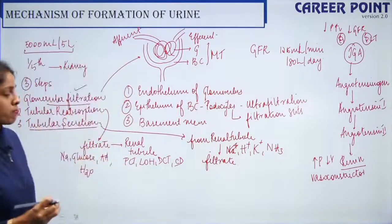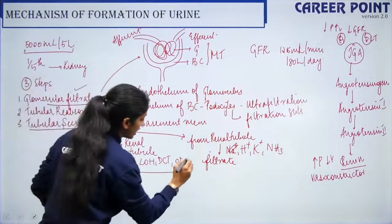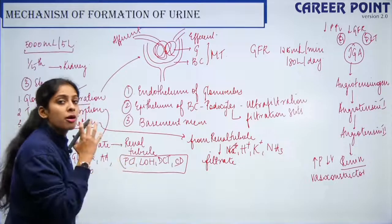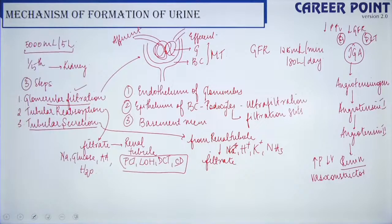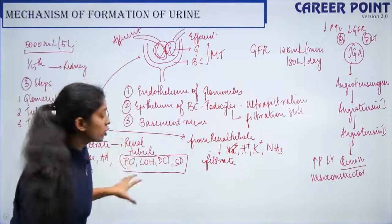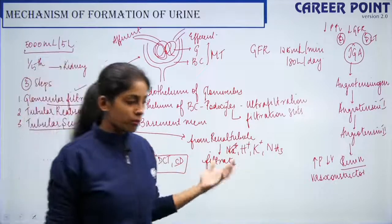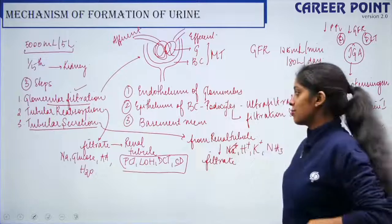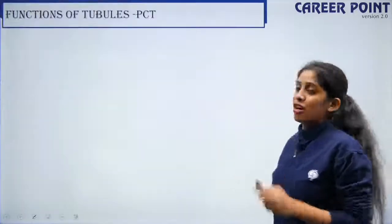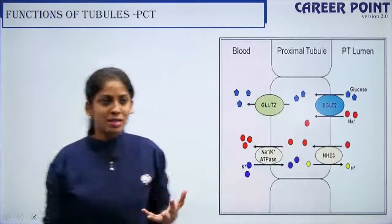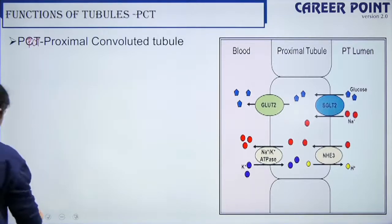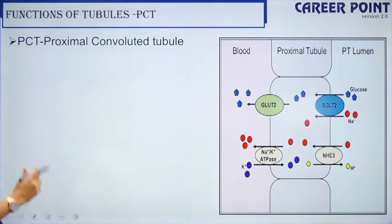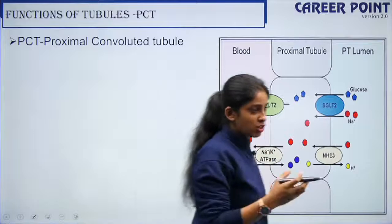Before discussing concentration of urine, we need to see the exact functions of each tubule. We are going to talk about reabsorption in detail and then move into how the kidney concentrates urine. The functions of the tubules is our next topic. Let's start with the PCT — proximal convoluted tubule.